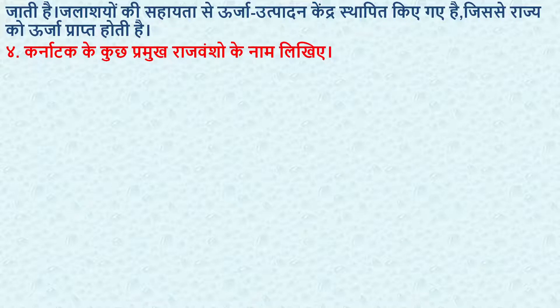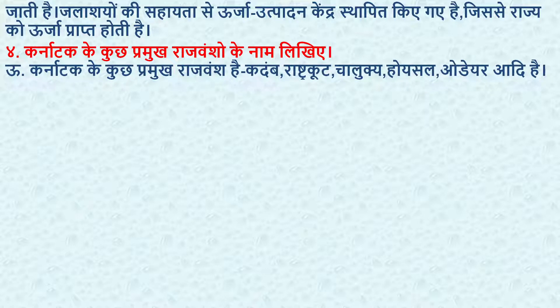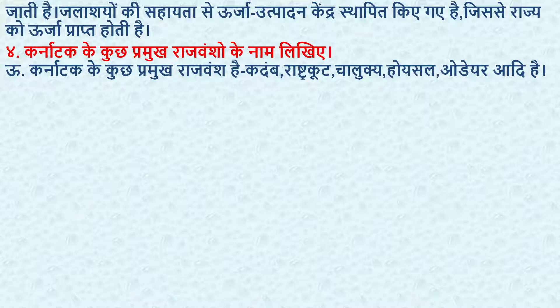Next — Karnataka ke kuch pramukh rajwanshon ke naam likhiye. Name some major dynasties of Karnataka. Answer: Karnataka ke kuch pramukh rajwansh hain — Kadamba, Rashtrakuta, Chalukya, Hoysala, Wadiyar, etc. The major dynasties of Karnataka are Kadamba, Rashtrakuta, Chalukya, Hoysala, Wadiyar, and others.